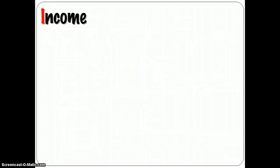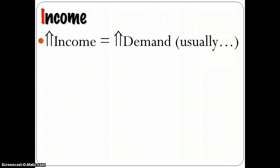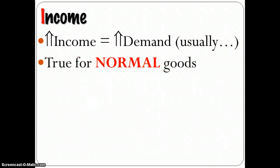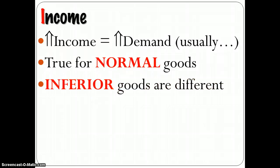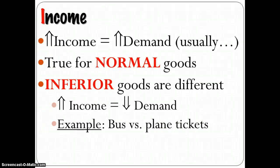Income is another factor in shifting demand. In most cases, at least in terms of what are known as normal goods, if my income goes up, I want more of a good, that would be a normal good. But there are some goods known as inferior goods that are different. In those cases, when my income rises, then my demand for those goods goes down. And when my income goes down, my demand for those goods goes up.